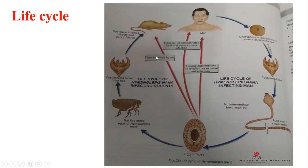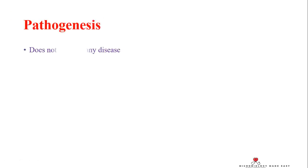Another route of transmission involves rats directly eating the eggs and getting infected. Additionally, rat fleas ingest eggs of Hymenolepis nana, developing cysticercoid larvae within the flea. When a rat ingests the infected flea, the rat becomes infected. This represents an indirect route through the rat flea as an intermediate host.